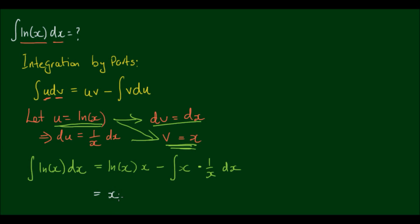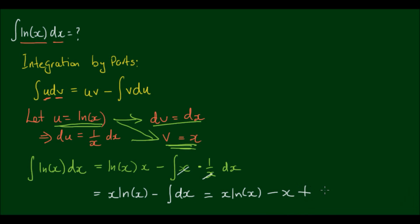So we can rewrite this as x times ln x minus the integral of... the x's will cancel out, so it's just minus the integral of dx. And we can simply write that as x times ln x minus x, plus the integration constant C. And this is the solution we are looking for.